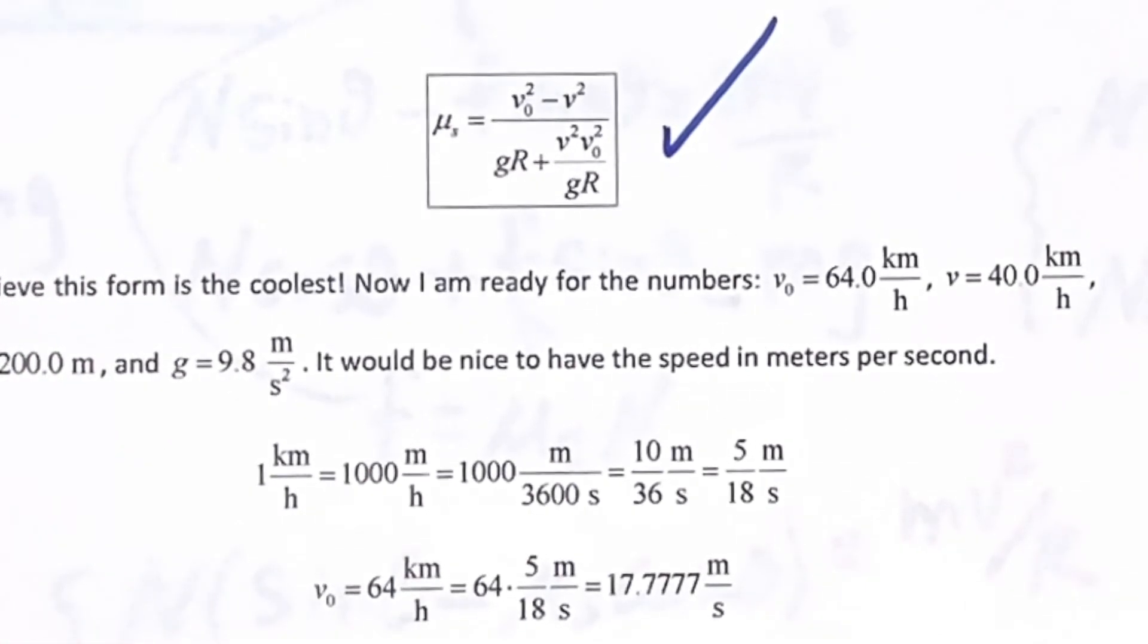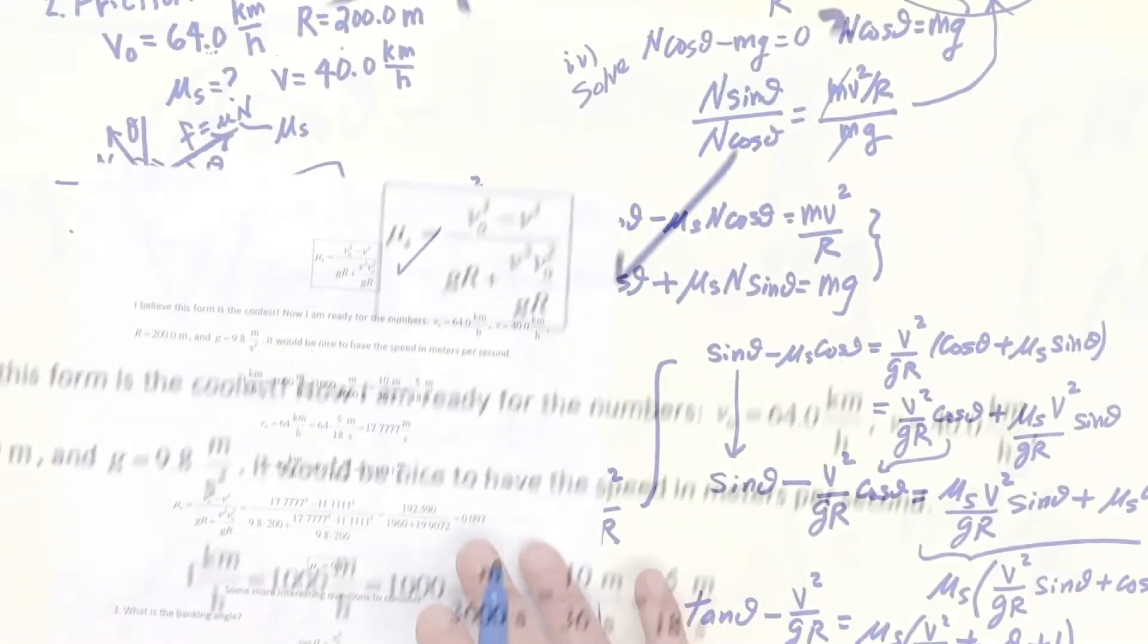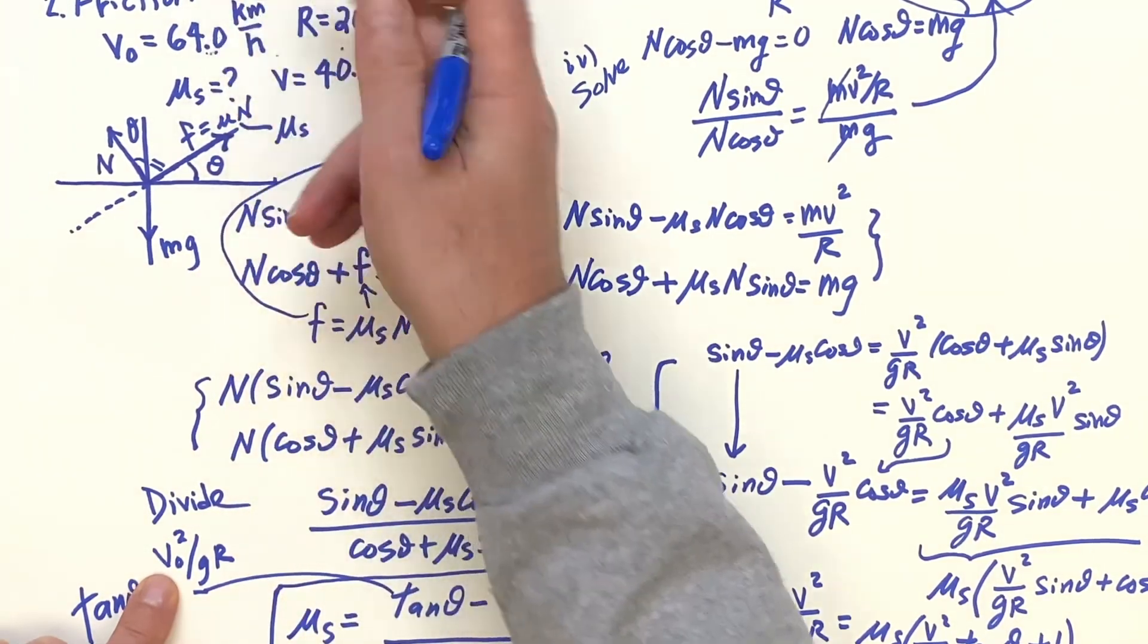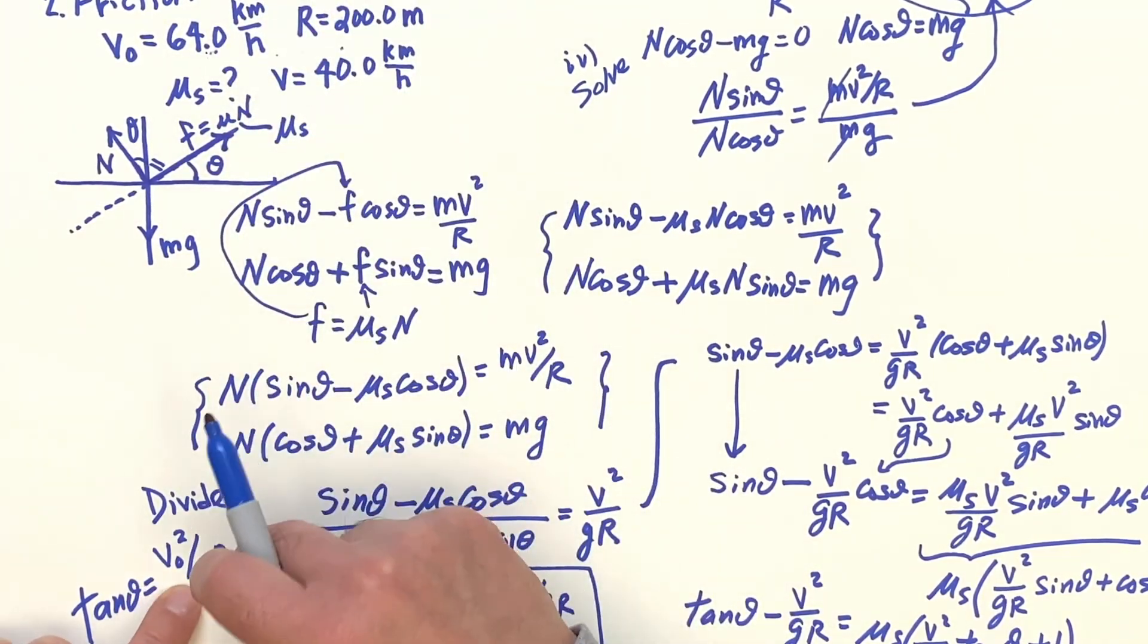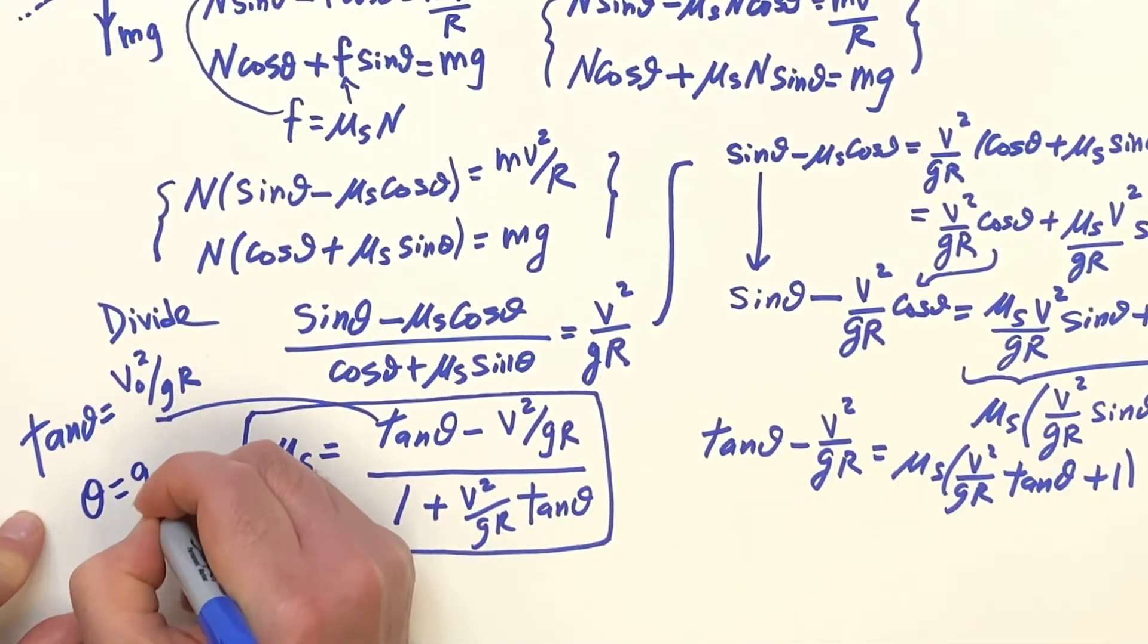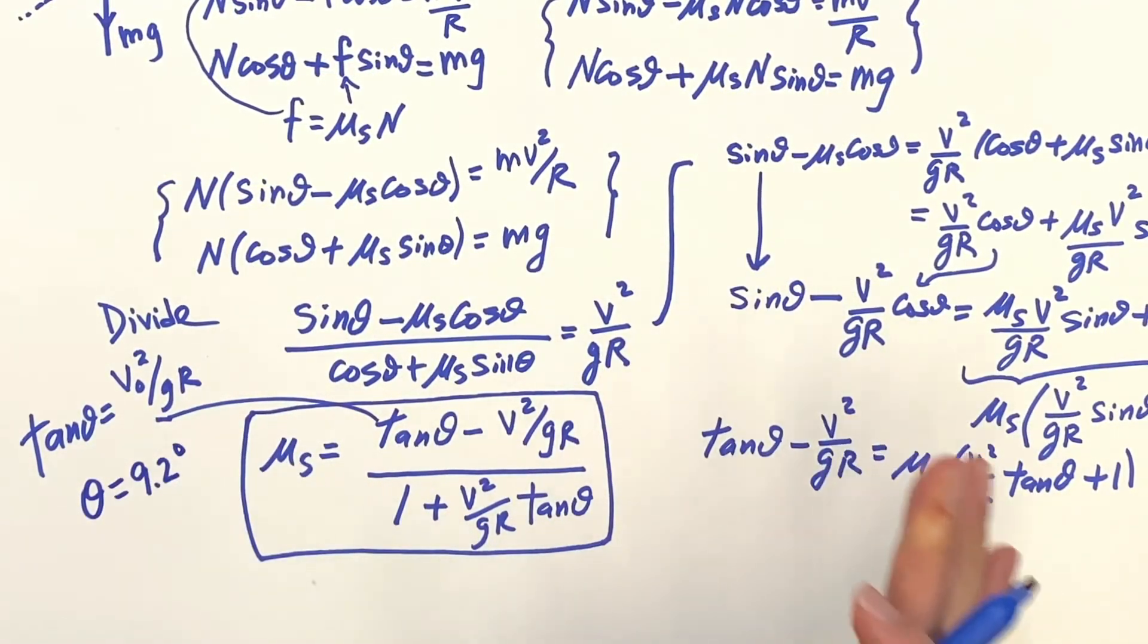And as a curiosity, I wanted to know what the banking angle was. And the banking angle, we have the V naught is the 64 kilometers per hour. We have the G, we have all that. So the banking angle here was 9.2 degrees. All worked out in the book for you.